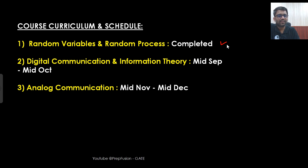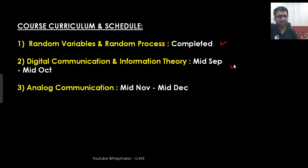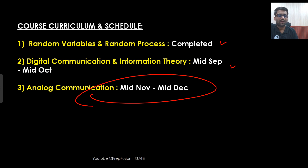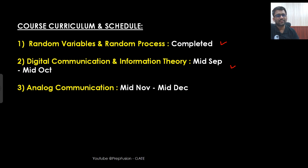The most important parts are random variable, random process, and digital communication and information theory — this is where students struggle. We will cover these first so you can get enough practice. Analog communication is very straightforward; it's mostly formula-based with a certain problem-solving pattern that can be built up any time. Even if you cover it in December, that's fine. That's why I'm covering the two tougher topics first, as 70% of questions are framed from there. Analog questions are rare — one or two — and very easy.